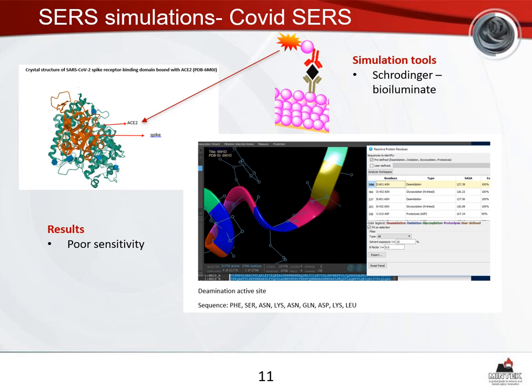We also used the HPC platform — NAMD — to download a SARS-CoV-2 spike receptor from the Protein Data Bank, analyze it and identify reactive amino groups of the ACE2, which we then synthesized in the lab and conjugated with our SERS tag and silver or gold nanoparticles. This was tested on a COVID antigen; however, it gave very poor sensitivity.